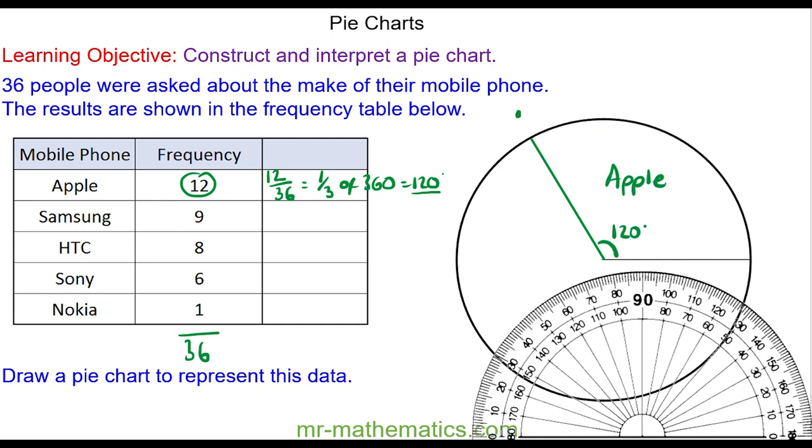For Samsung, we have nine people out of a total of 36. The fraction simplifies to make one quarter. We can divide both by nine, and one quarter of 360 is 90 degrees.